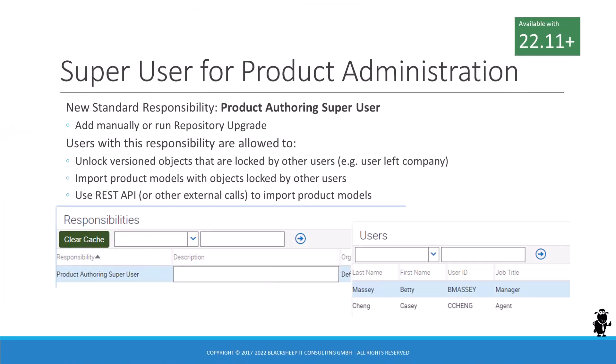When a product authoring user is unavailable or has left the organization, any records that they have locked under their Siebel user account can cause issues and delays, because they can only be unlocked by the user who locked them in the first place. This is the case in Siebel CRM versions prior to 22.11. With the new product authoring superuser responsibility, we can now designate Siebel users who can unlock and administer versioned object definitions in the product administration area, such as product definitions, classes, attributes, and so forth.